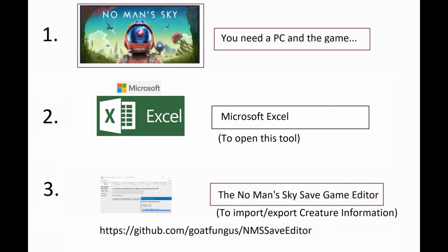You can get the Save Game Editor at the URL shown. This video does not cover how to install or use the Save Game Editor and assumes you have some familiarity working with it. You also need a JPEG editor and viewing utility to save and view your creature image files.